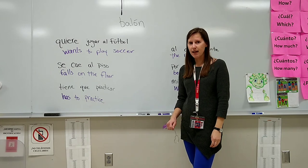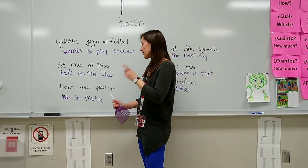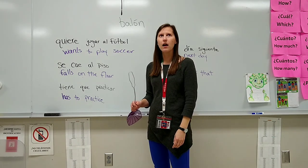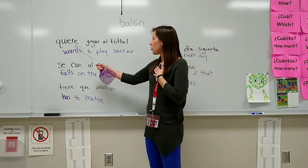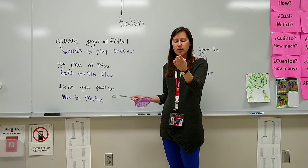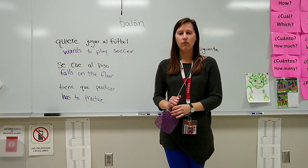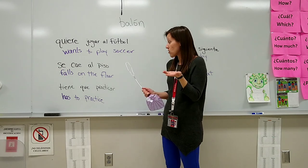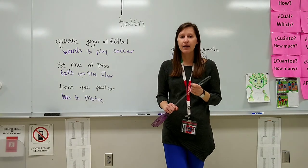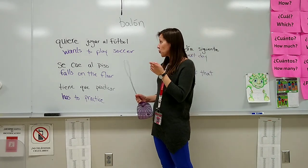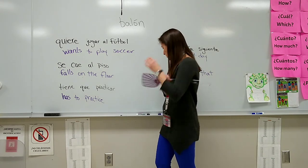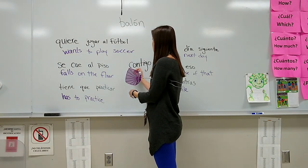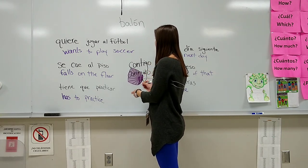Cuando la amiga de Olivia le dice tienes que practicar, Olivia tiene una idea. Olivia le dice a su amiga: Quiero practicar contigo. ¿Puedo practicar contigo? Y la amiga le dice: Sí, Olivia, tú puedes practicar conmigo. Contigo means 'with you'; conmigo means 'with me.'